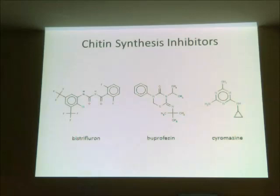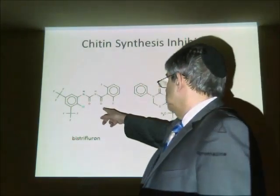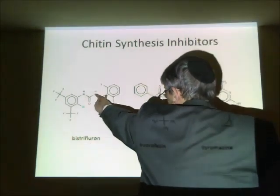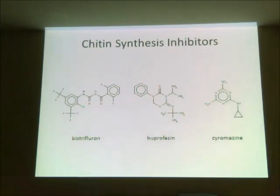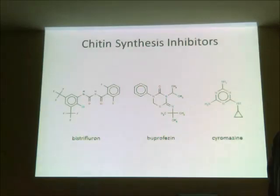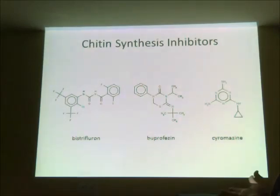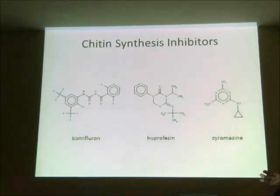The first compounds I want to discuss are chitin synthesis inhibitors. This compound, bis-trifleuron, contains a benzoyl urea group — and we've seen benzoyl ureas as herbicides. This particular one is a chitin synthesis inhibitor, meaning the insect's exoskeleton is composed of chitin. If the insect is unable to biosynthesize chitin, that shuts down its ability to have a protective exoskeleton, making it prone to injury and infection, ultimately killing it.